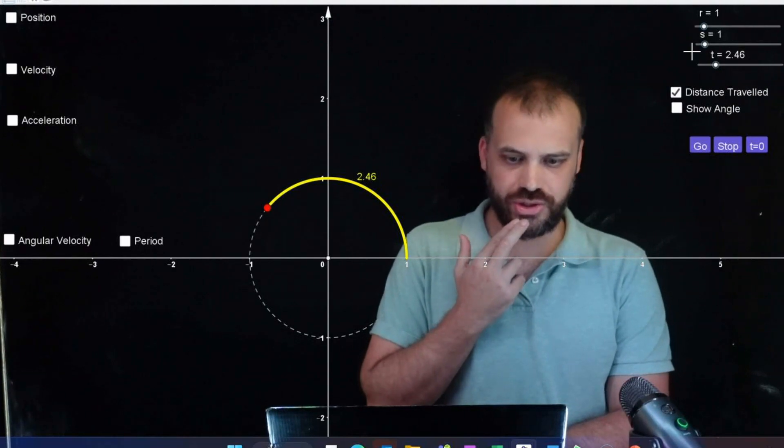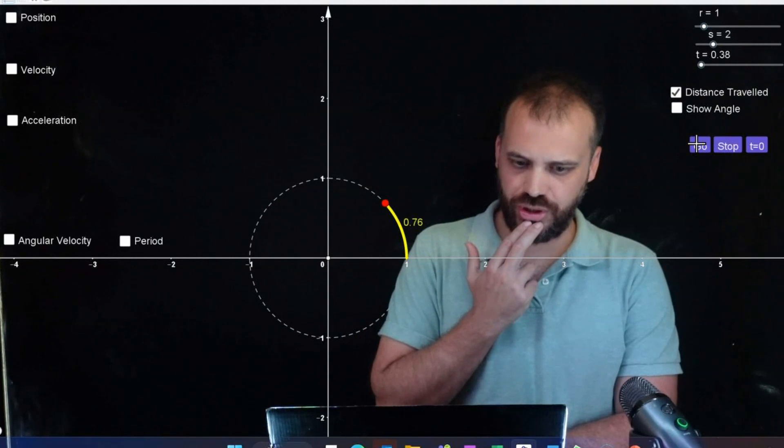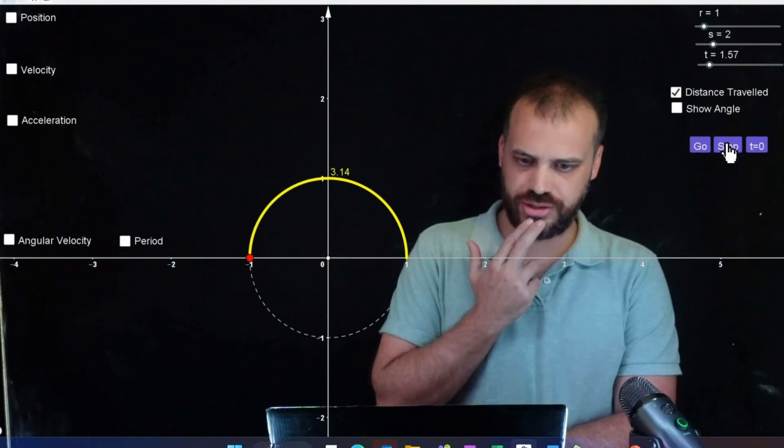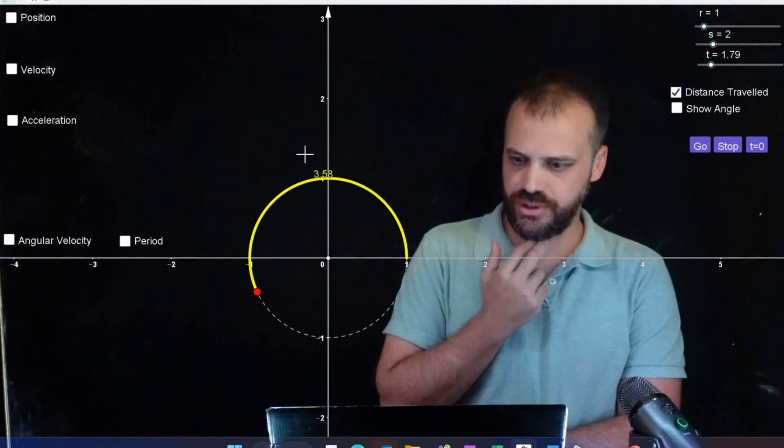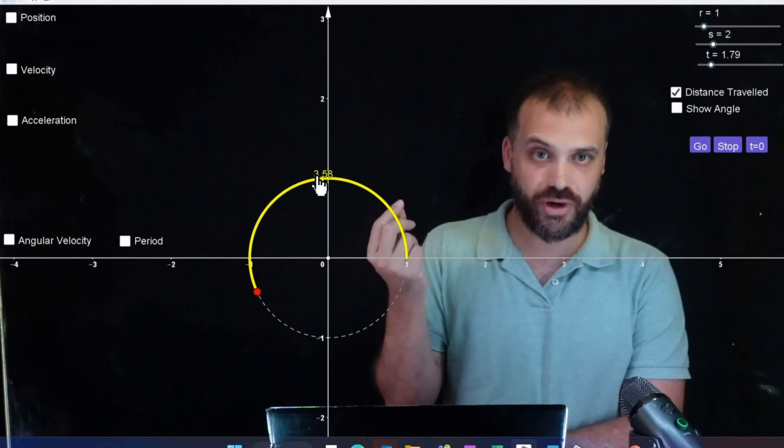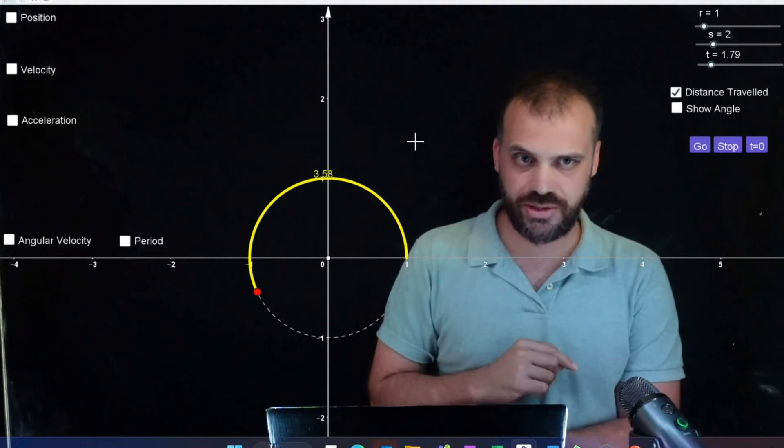If I were to change the speed of this thing, make it speed equals 2 and press go, and let's stop it. Okay, we're at time 1.79, but the distance traveled is 3.58. That makes sense. Speed equals distance over time.